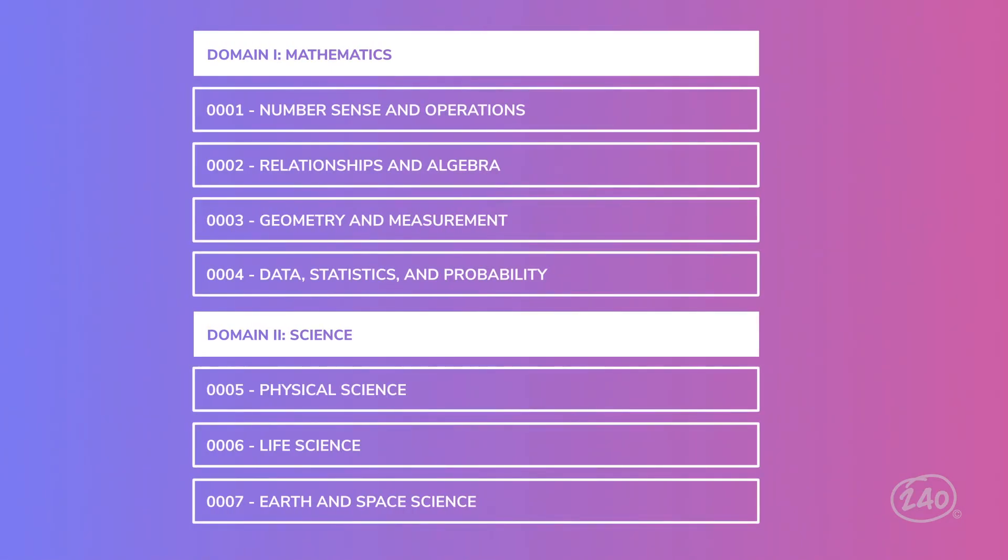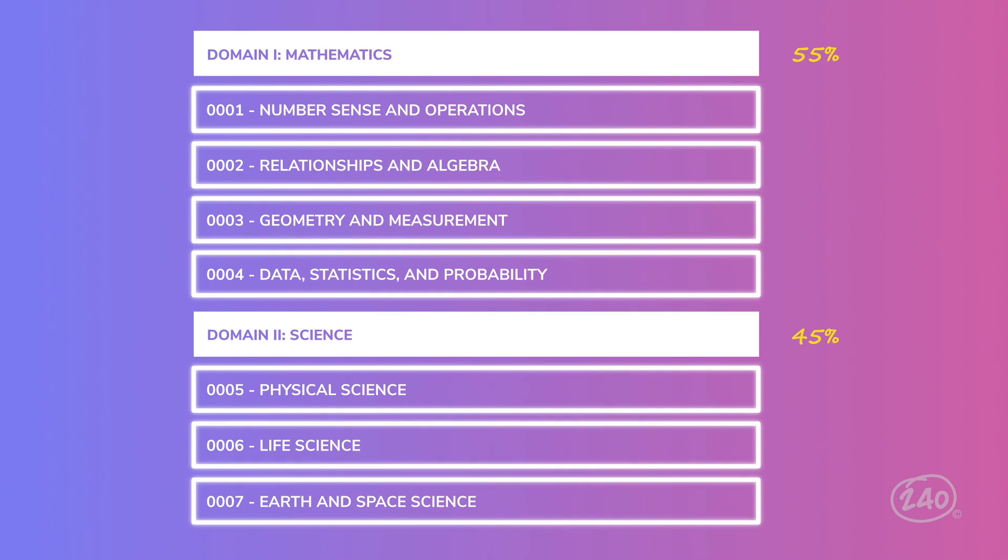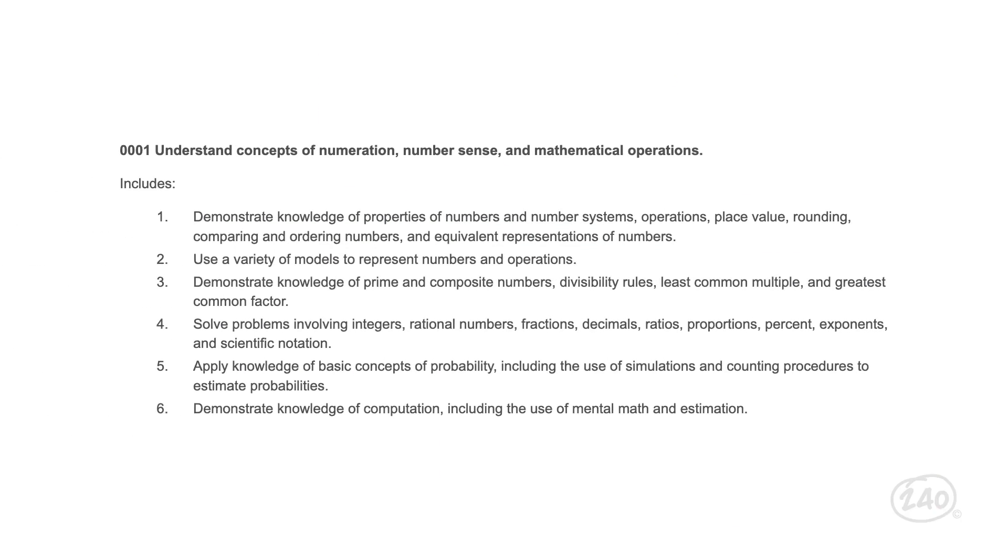Again, the MEGA Elementary Education Multi-Content Exam subtest one is made of two domains: mathematics and science. The questions are split up fairly evenly between the two domains with about 55% of the questions focusing on math and 45% of the questions on science. Each of these two domains are made up of a few competencies that provide more information about the questions you'll be asked. But let's be real, reading through these competencies can give you a headache. We just need to know the most important things and how they're going to be tested. But that's exactly why I'm here. I want to point out the highlights and make this as easy as possible for you. So buckle up, because we're going to go over a key concept from each competency.